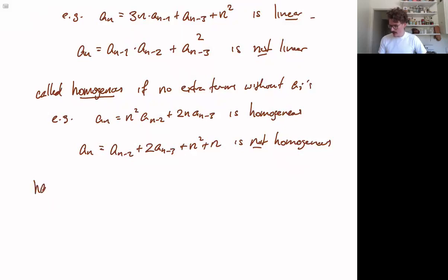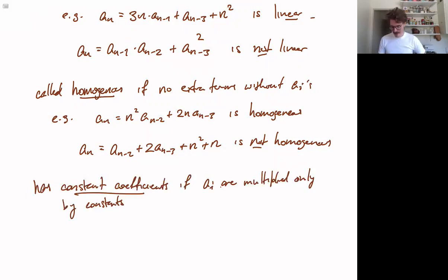And a couple more. A recurrence has constant coefficients if the ai are multiplied only by constants. For example, an equals 3 an minus 1 plus 2 an minus 3. This does have constant coefficients. Because these things that are serving as the coefficients of the a sub i are constants. They're just 3 and 2.